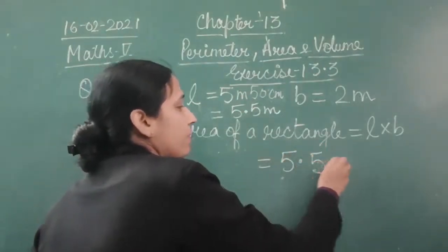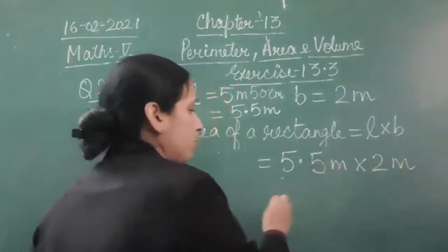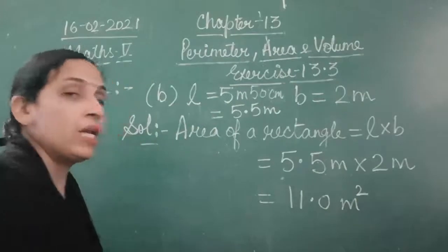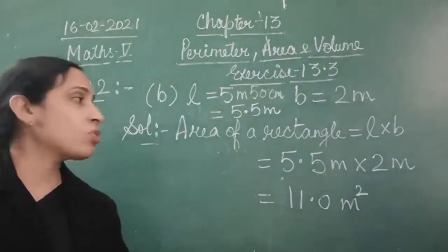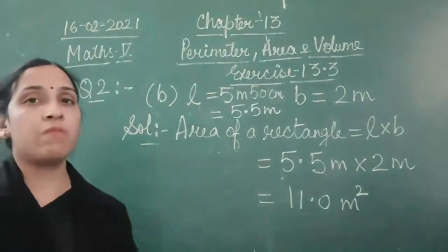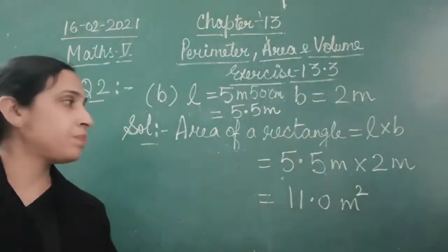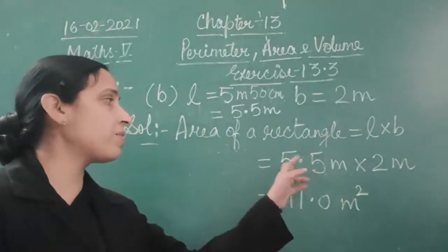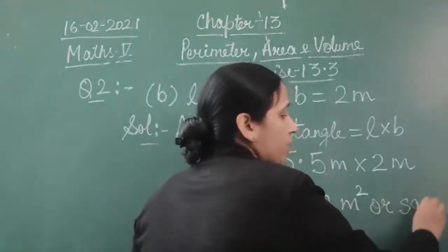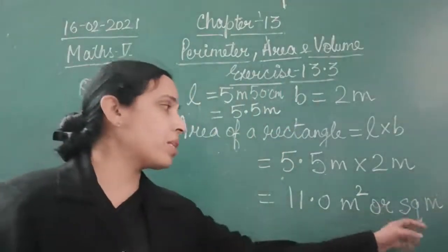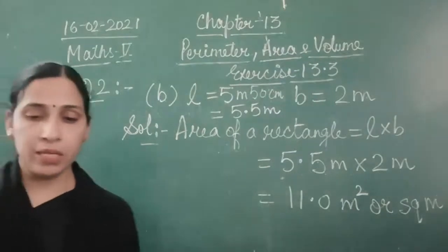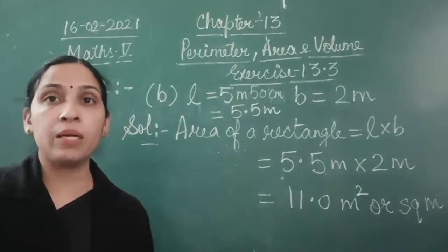So, area of a rectangle = L × B = 5.5 m × 2 m. 2 fives are 10, carry 1; 2 fives are 10, plus 1 = 11. The answer is 11.0 square metres. Both 'square metre' and 'metre square' are correct units — you can write either. That completes Question 2, Part B.